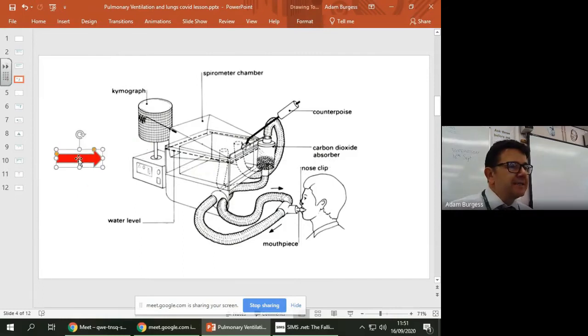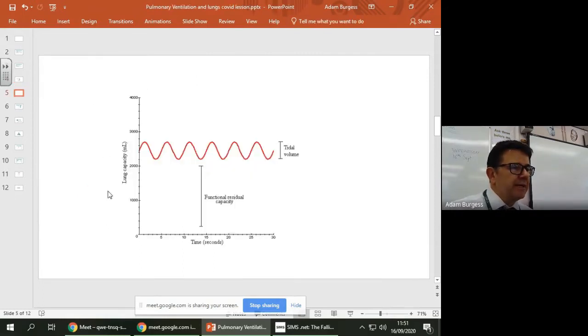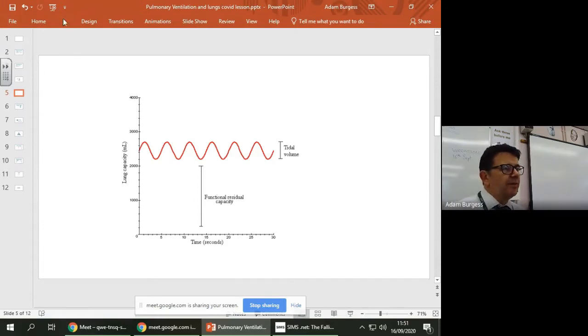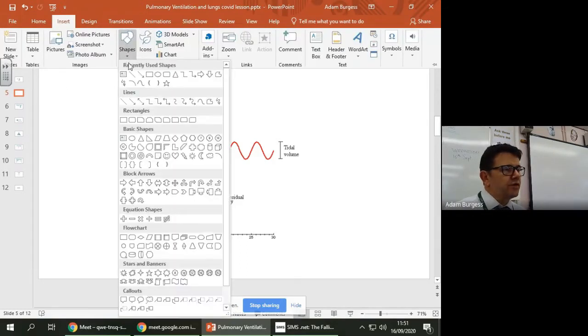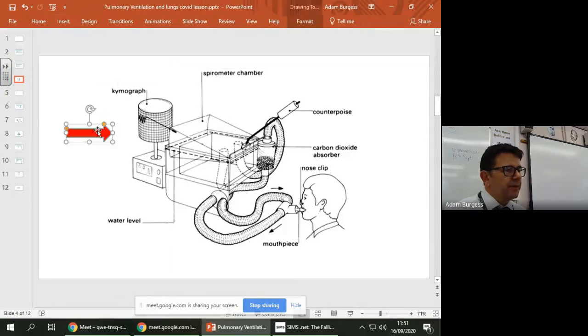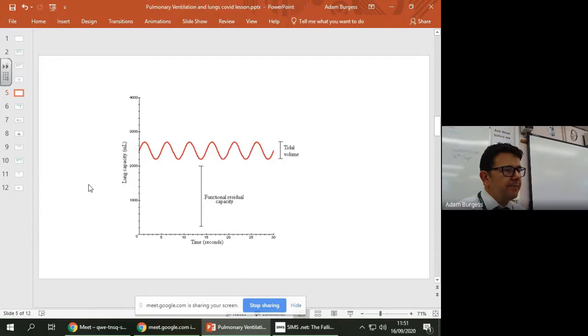Anyway, so that's the piece of machinery and the kymograph will look something like this. Okay, so let me just put another arrow, actually you want to just copy that one, copy, paste, there we go.